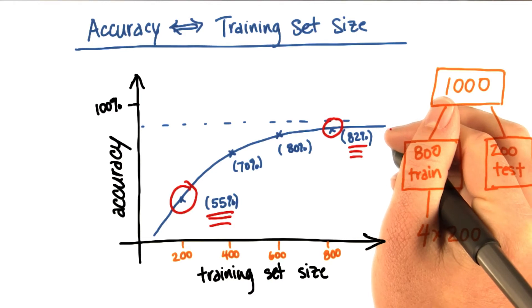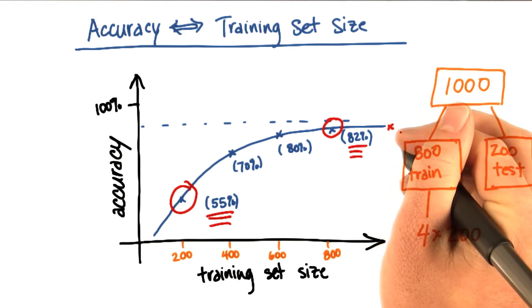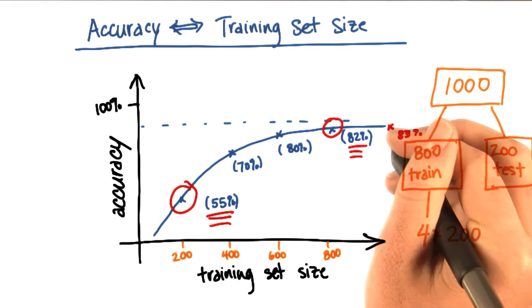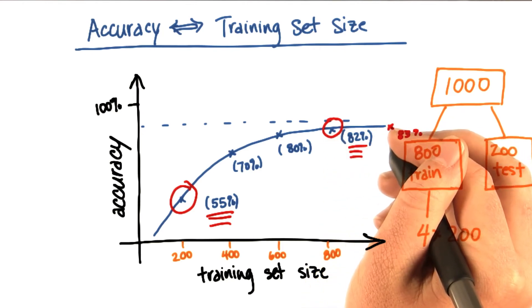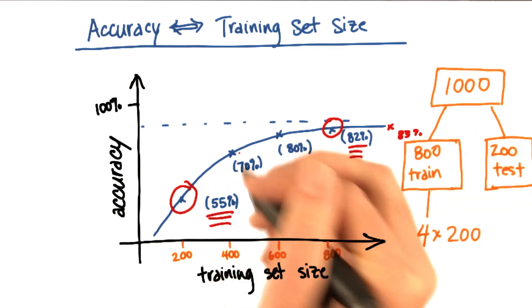And that even if I went out to, let's say, 1,000 events, I might only get up to 83%. So there wasn't as much of an advantage to add in another 200 events at the end than this first 200 events at the beginning.